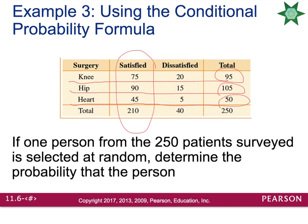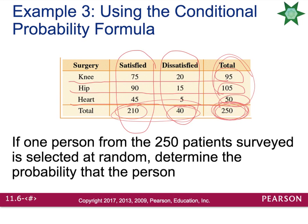You can also read down the columns. In the satisfied column: 75 knee patients, 90 hip patients, 45 heart patients — 210 people total were satisfied. In the dissatisfied column: 20 knee, 15 hip, 5 heart — 40 of the 250 were dissatisfied. The 250 in the bottom right totals up both columns and rows, confirming 250 patients total.